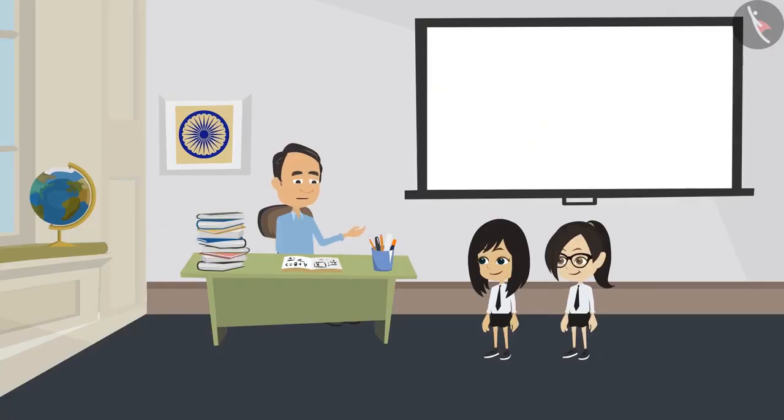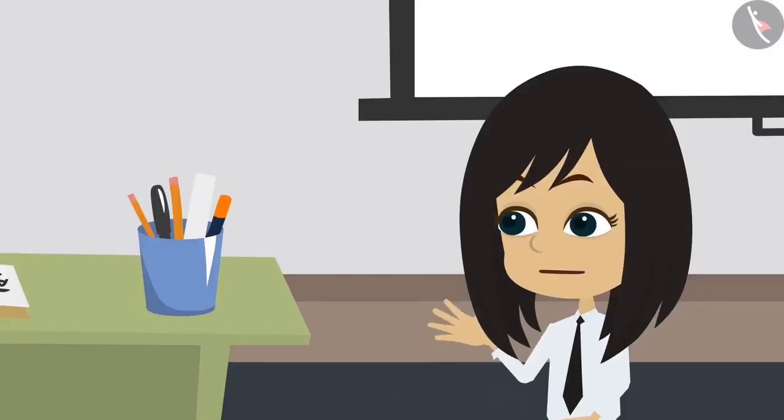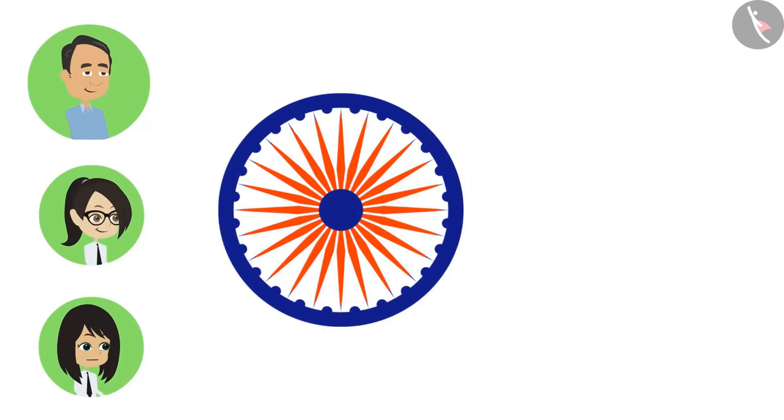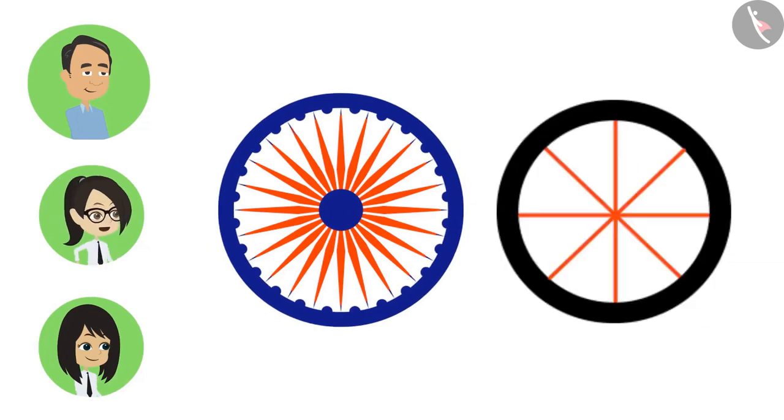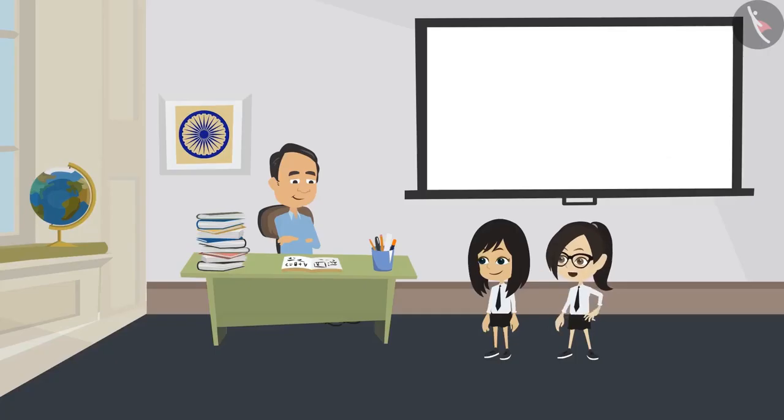Absolutely correct. Like this, there can be several radius in one circle. Like in the Ashok Chakra. And also in the wheel of our bicycle. Now I understand, sir.